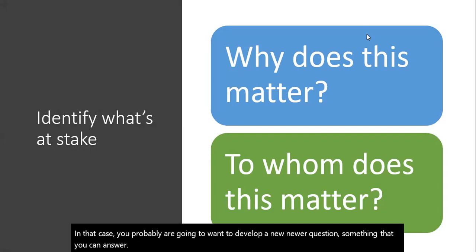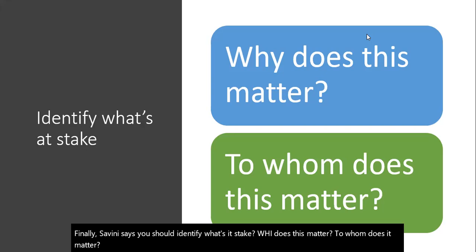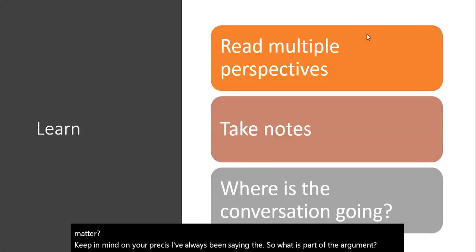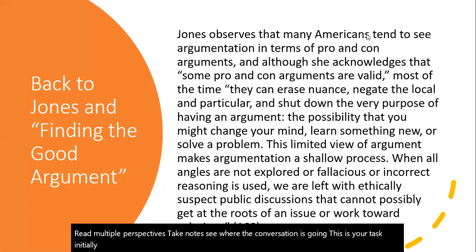Finally, Savini says you should identify what's at stake. Why does this matter? To whom does it matter? Keep in mind, on your précis, I've always been saying the so what is part of the argument. Now, read multiple perspectives, take notes, see where the conversation is going. This is your task initially, and then you dig into the research.